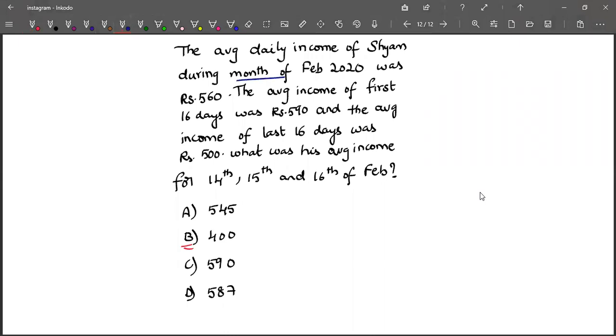During the month of February 2020, 2020 is a leap year, so February has 29 days. For those 29 days, the average is 560, which means for 29 observations, the average is 560.